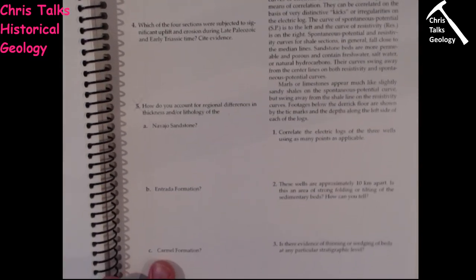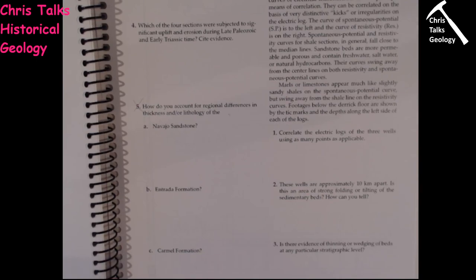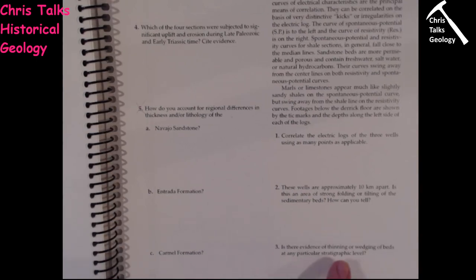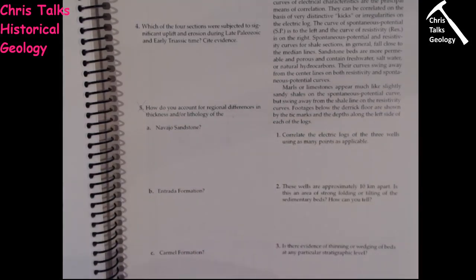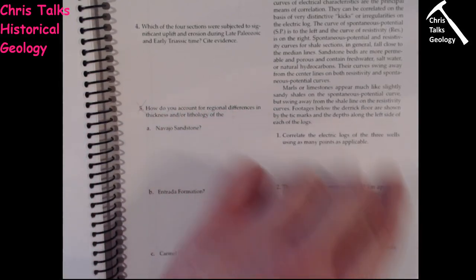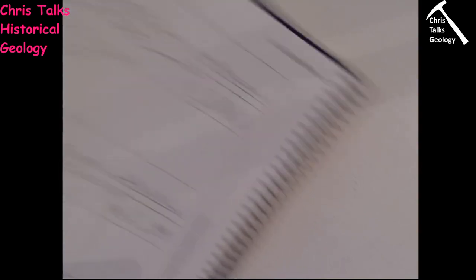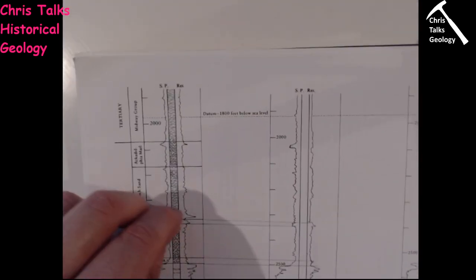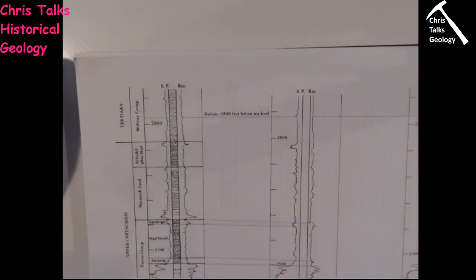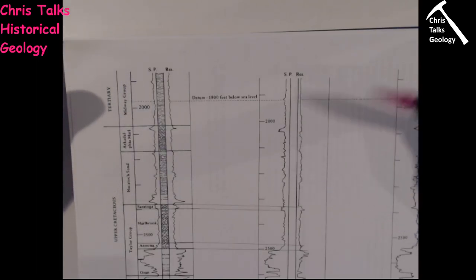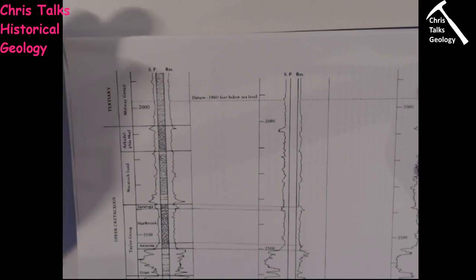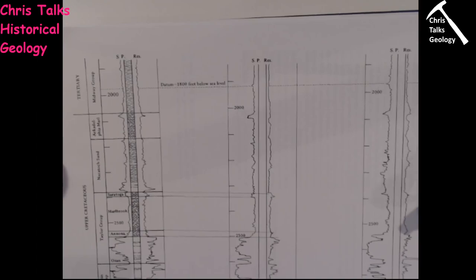Question 3: Is there evidence of thinning or wedging of beds at any particular stratigraphic level? Thinning is when a bed gets narrower — thinner and thinner until it pinches out and disappears. Wedging is the reverse: you see the bed getting thicker over time. For example, look at whether the Saratoga Formation gets steadily thicker (wedging) or thinner (thinning). The evidence needs to be clear and obvious in your correlation — a couple of millimetres' difference is not solid evidence for either.